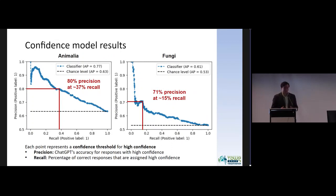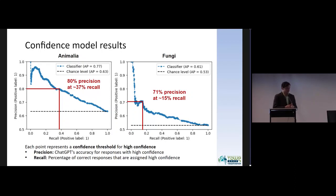For fungi, performance wasn't as good. Looking at the data, there are a lot of issues with inconsistent inputs — for example, for the genus field, values like "unknown" and similar problems. There are a lot of reasons why the performance might not be as good, and someone else might know better why.